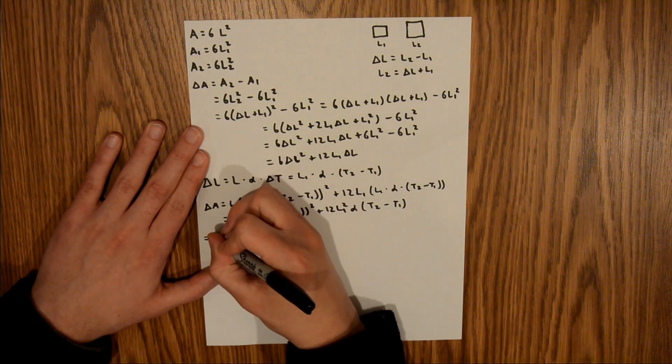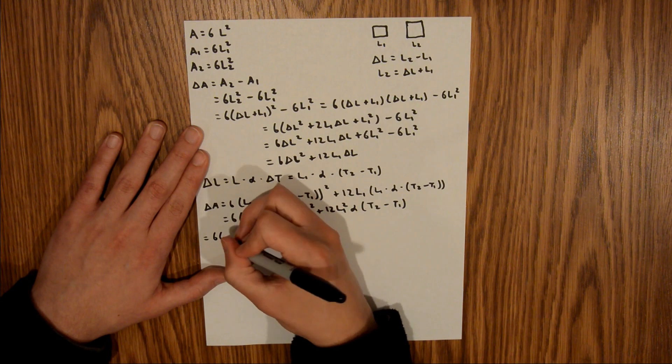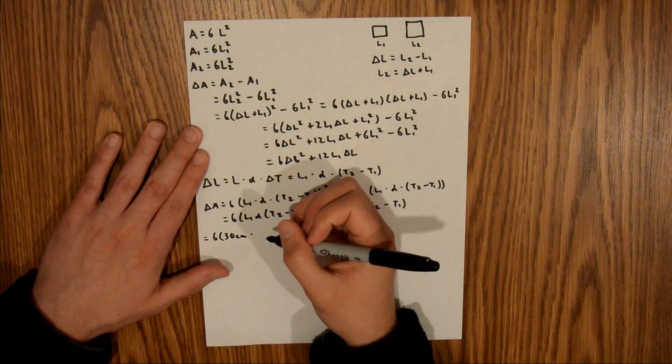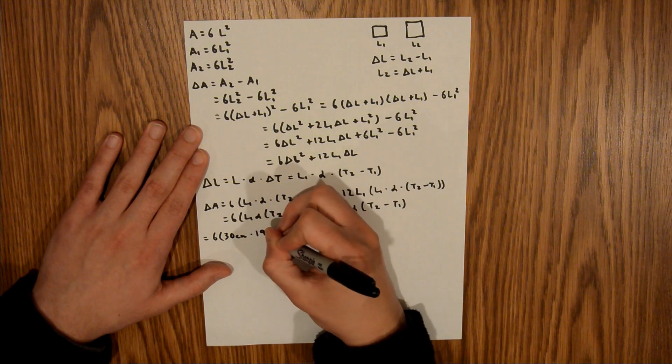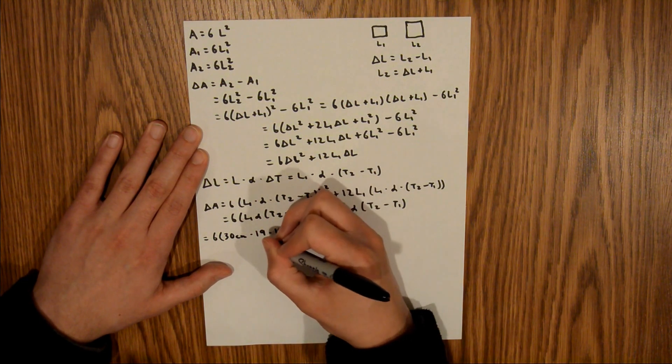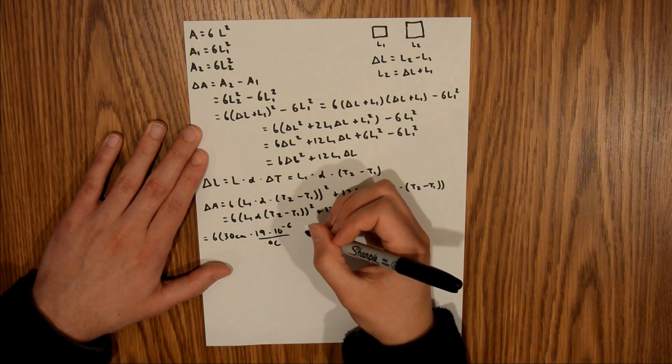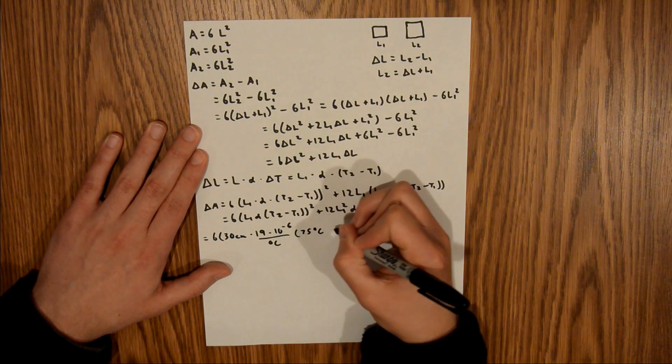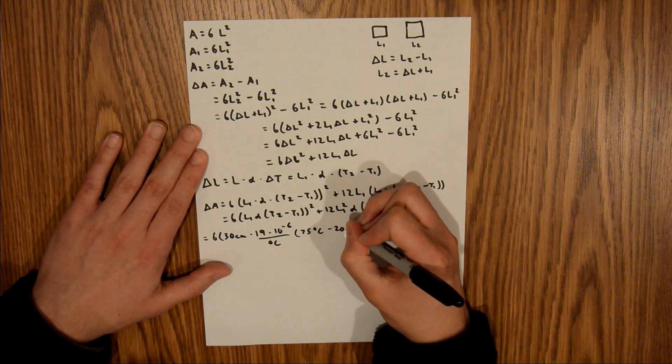Okay, so this is equal to 6 times 30 centimeters times alpha, which in that table you would find 19 times 10 to the negative sixth per degree C. That's going to be times 75 degrees C minus 20 degrees C. That entire quantity is squared,